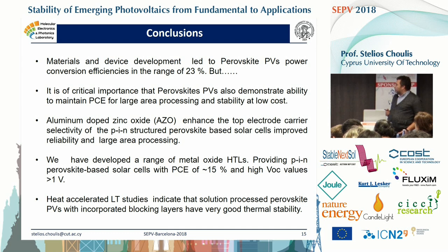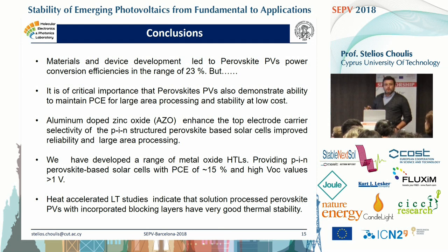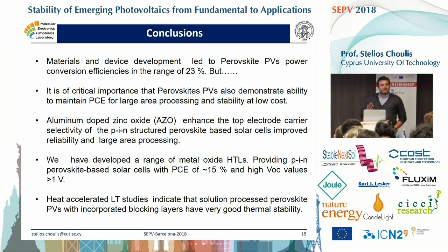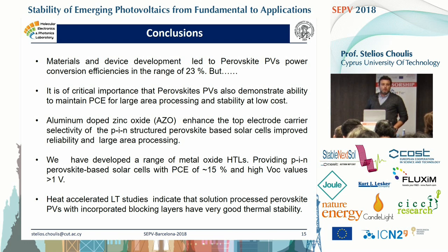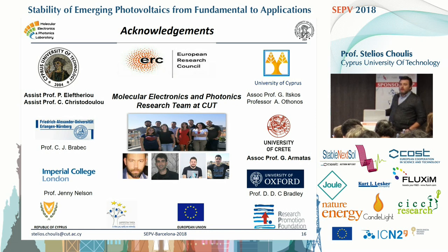I showed you that aluminum zinc oxide can be a good material to improve the top electrode — you can make reliable solar cells with improved performance. On the bottom side, we have developed a range of metal oxides; I showed you two examples. We can achieve efficiency around 15% with high voltage of one volt. We haven't yet tested stability but are planning to do so. Finally, the latest research on thermal stability — Fedoros in his poster will show that we can get 1,000-hour lifetime at 60°C by using thick fullerene buffer layers.